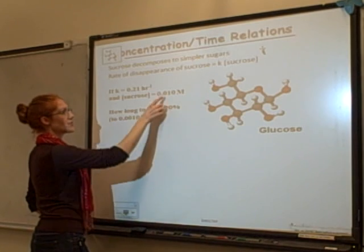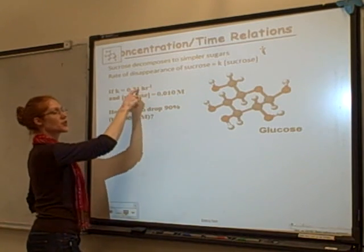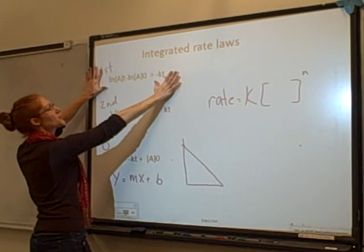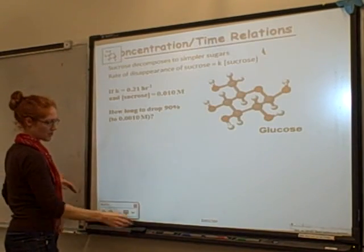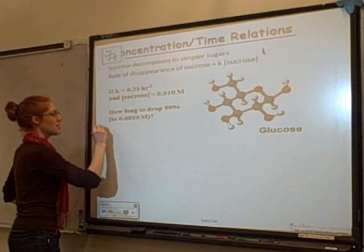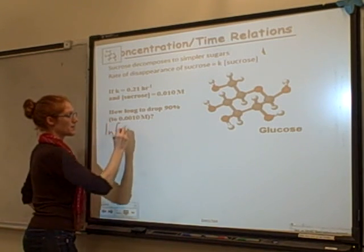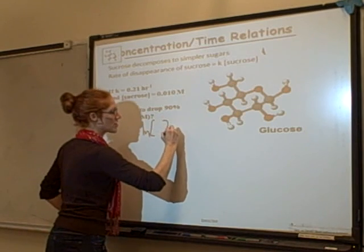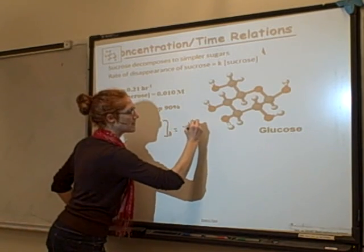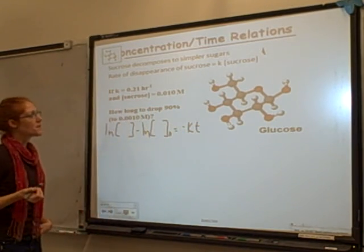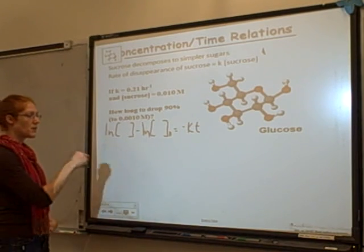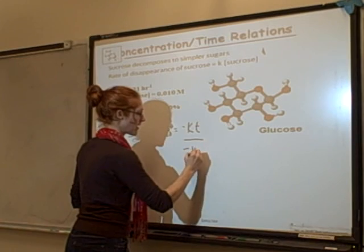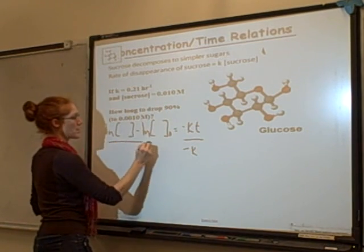So I have an initial concentration, a final concentration, a K, and I'm looking for the time. It's first order. So I'm going to use this equation. I'm going to just copy that equation first. Natural log of my final concentration minus natural log of my initial concentration equals negative KT. I know I'm solving for time. So I'm going to go ahead and just divide both sides by negative K.